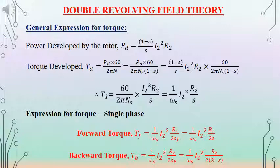We must consider both forward and backward torques. The forward torque tf = (1/omega_s) * I2^2 * R2 / (2*sf) = (1/omega_s) * I2^2 * R2 / (2s), using sf = s. The backward torque tb = (1/omega_s) * I2^2 * R2 / (2*sb), substituting sb = 2 - s, giving tb = (1/omega_s) * I2^2 * R2 / (2*(2-s)).